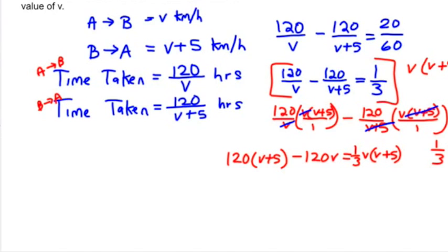So what I get is 120V + 600 minus, oh, this is so convenient, 120V. And that's going to leave me with 600. So 600 equals one third V times (V+5).